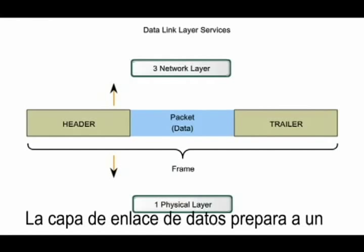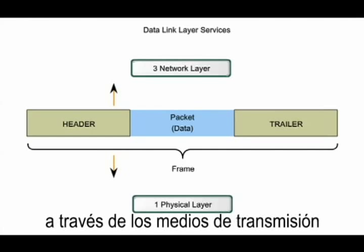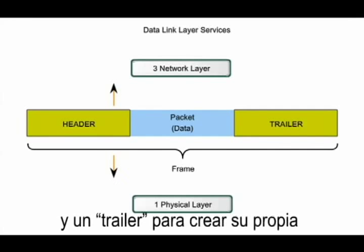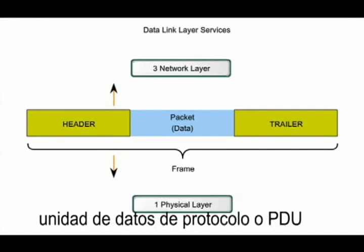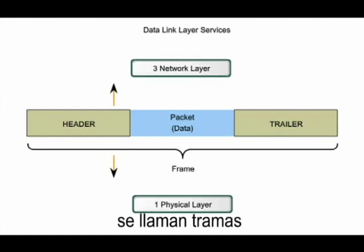The data link layer prepares a network layer packet for transport across the local media by encapsulating it with a header and a trailer to create its own protocol data unit, or PDU. The data link layer PDU is called a frame.